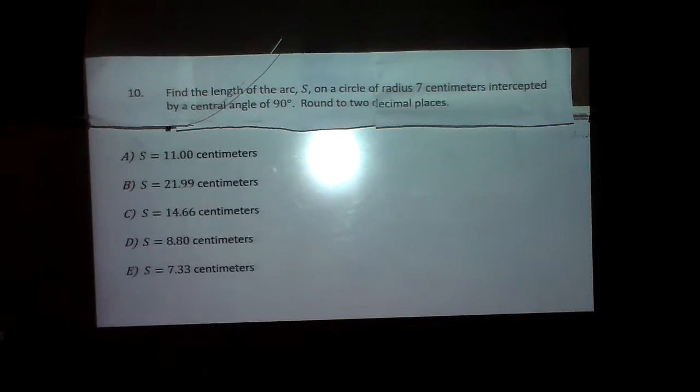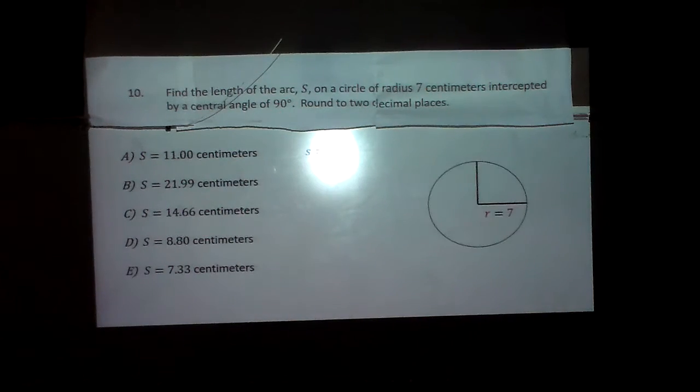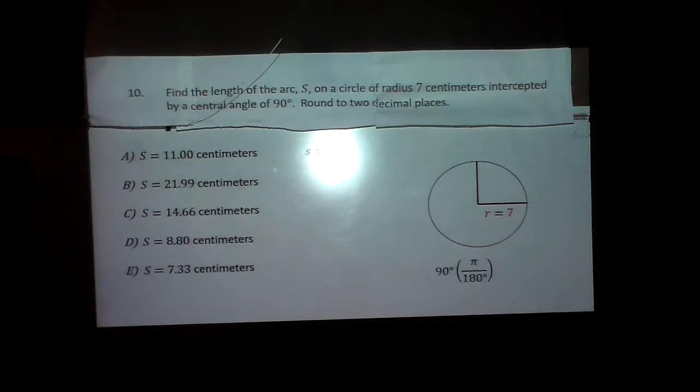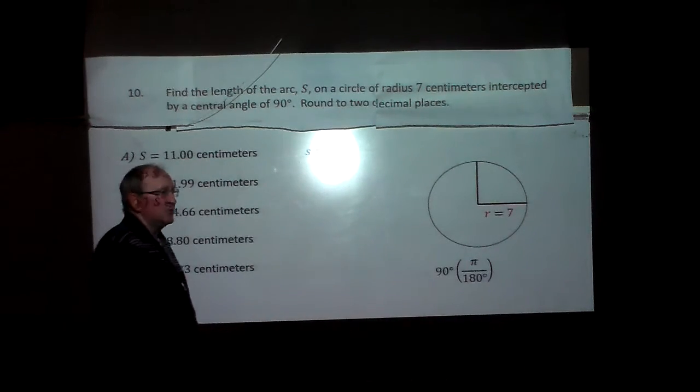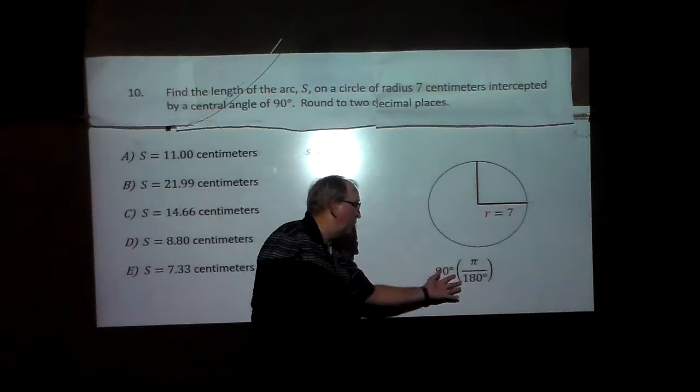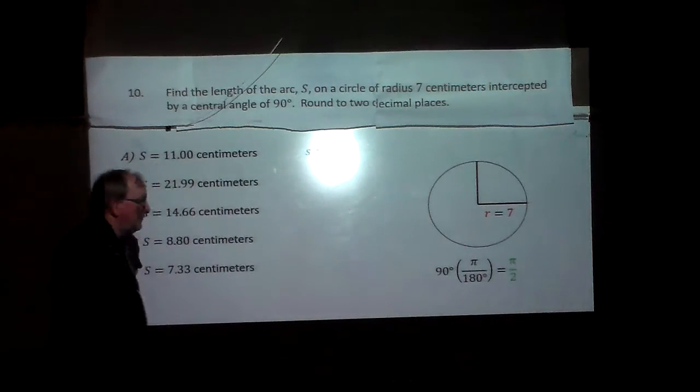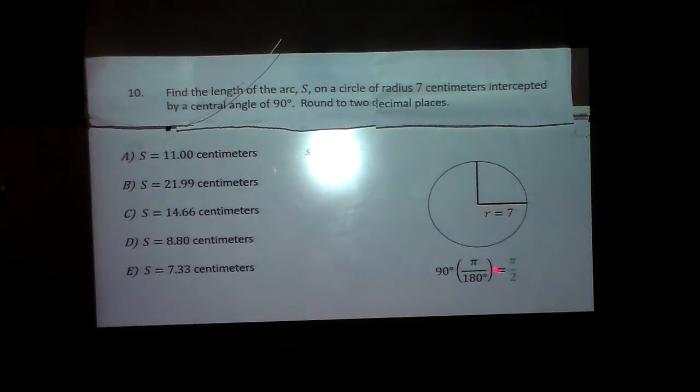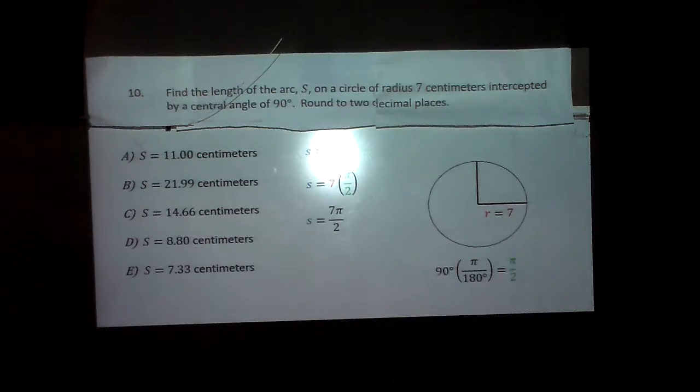So let's look at the second one. Find the arc length S of a radius 7. Here we go, here's our circle. Our problem is, though, this one's in 90 degrees. So the first thing I need to do is convert this 90 degrees to radians, which you do by multiplying by pi over 180, or basically 90 and 180 reduce to 1 half, or pi over 2. So all I have to do to find the arc length is take the radius, 7, times the arc length. That makes my answer 7 pi over 2.